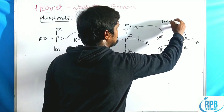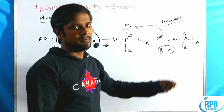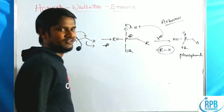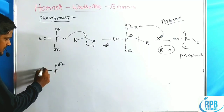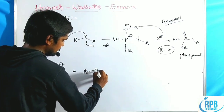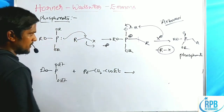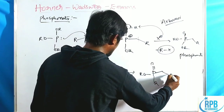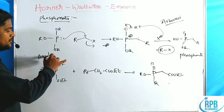So this step is called the Arbuzov reaction, and we prepare alkyl phosphonates. This is a very simple method to prepare phosphonates. For example, triethyl phosphines treated with ethyl bromoester gives P=O, OR, OR with a COOEt group through the Michaelis-Arbuzov reaction.